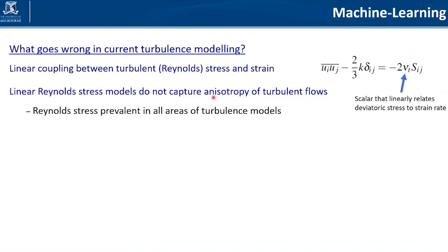The Reynolds stress shows up in a lot of different areas of turbulence modeling — not only as a closure but also in the transport equations for turbulence. It shows up everywhere, and therefore it seems like a very obvious target for a particular part of the modeling that should be improved.